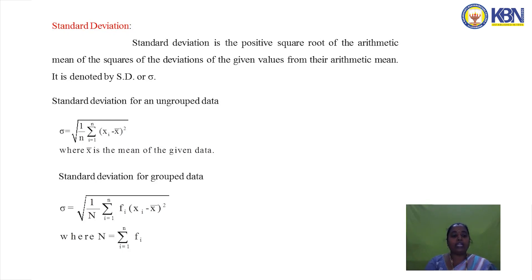For discrete or continuous series, σ = √[1/N × Σfi(xi − x̄)²], where N is the total frequency.